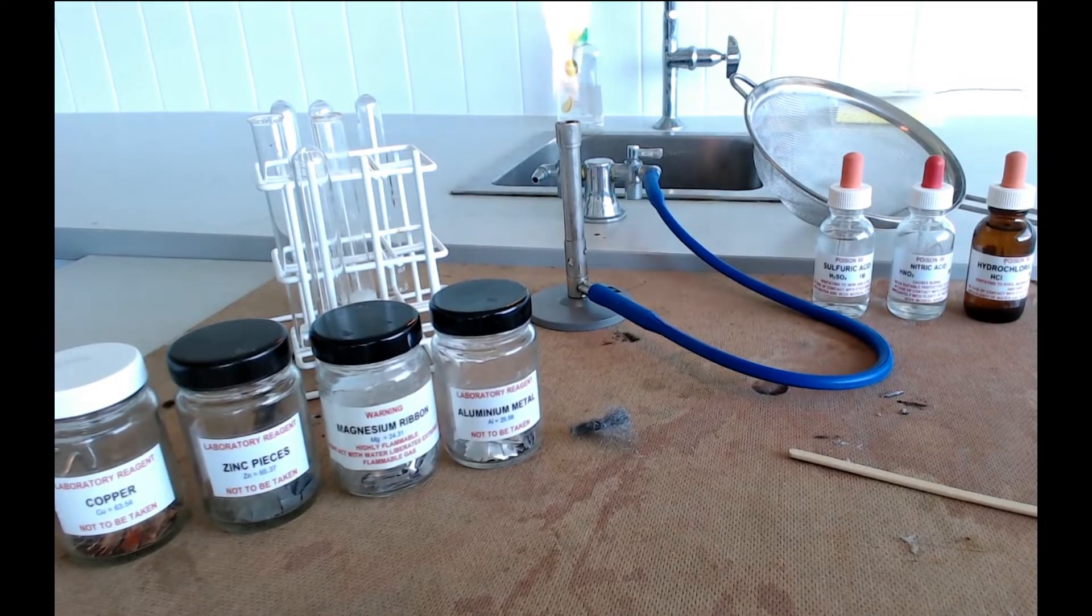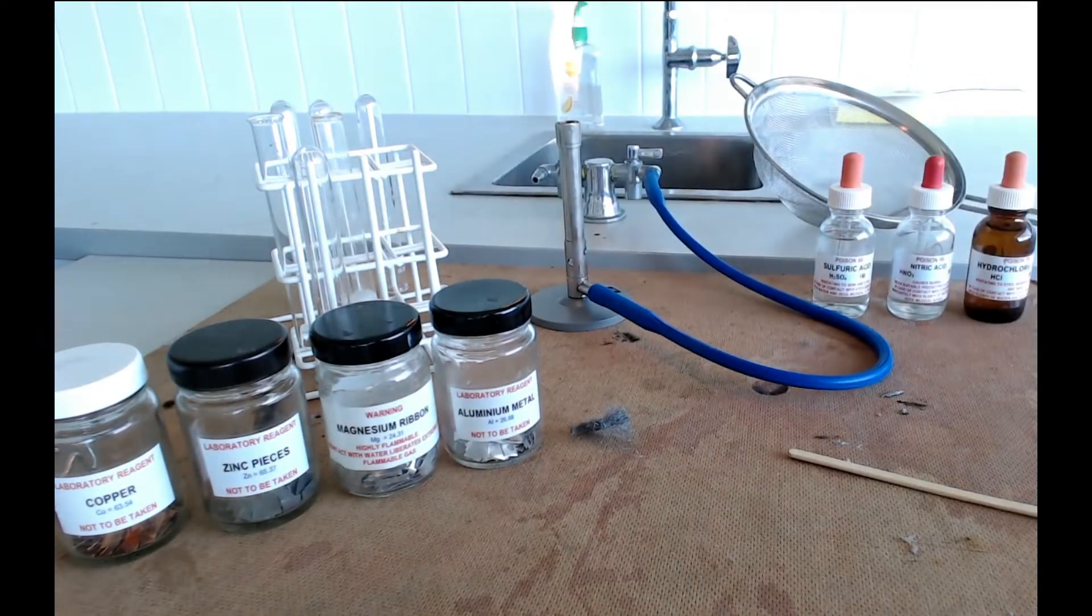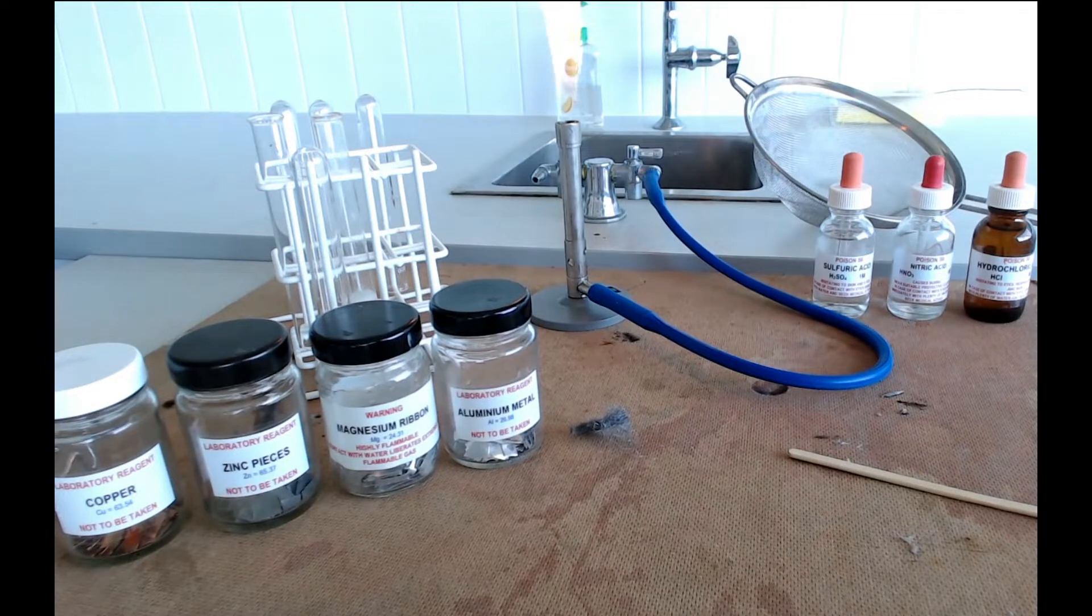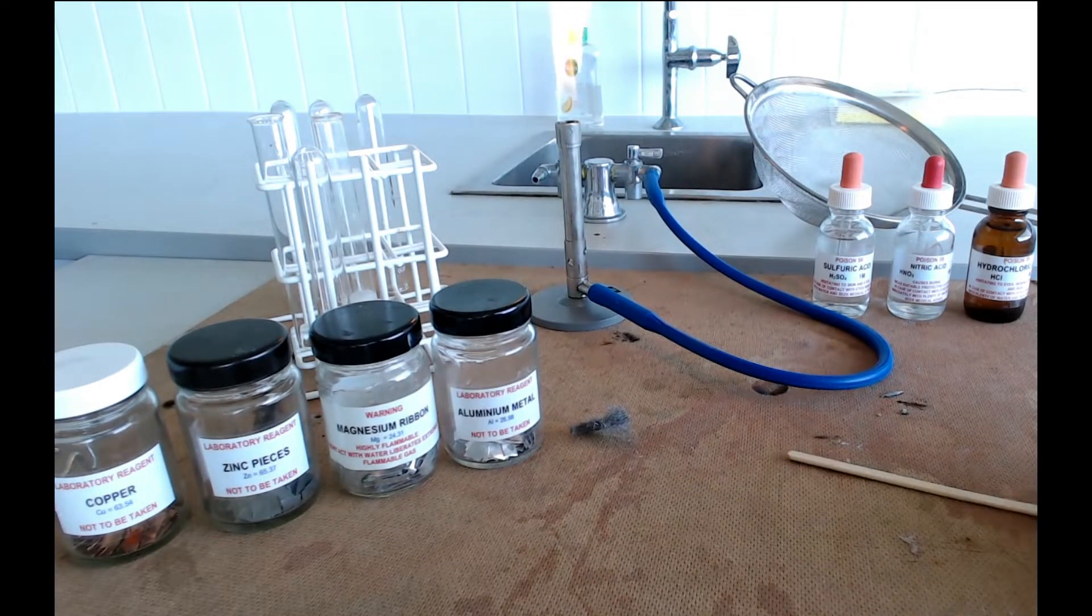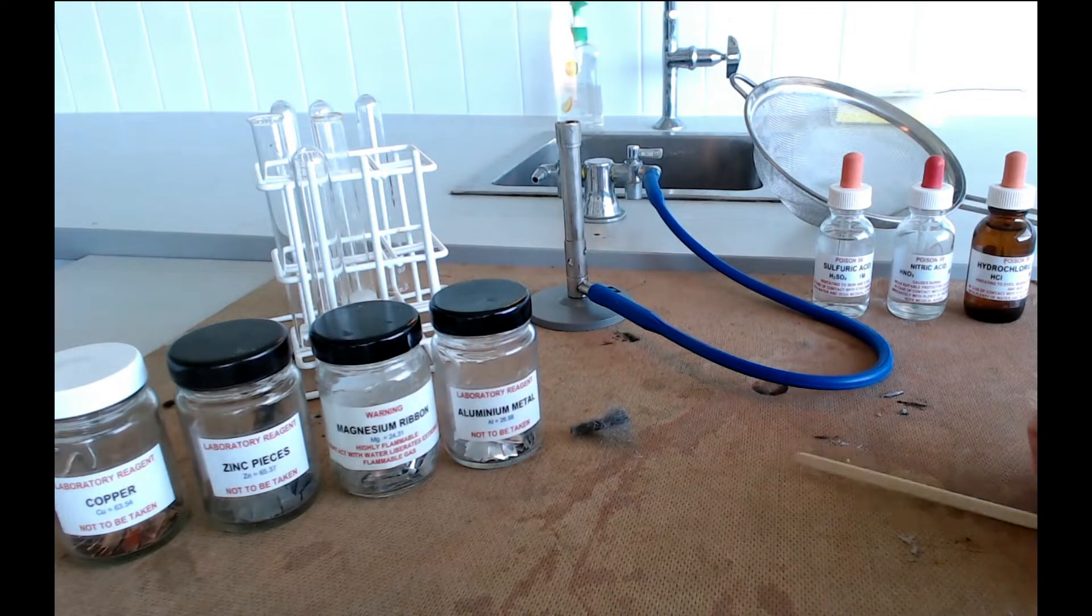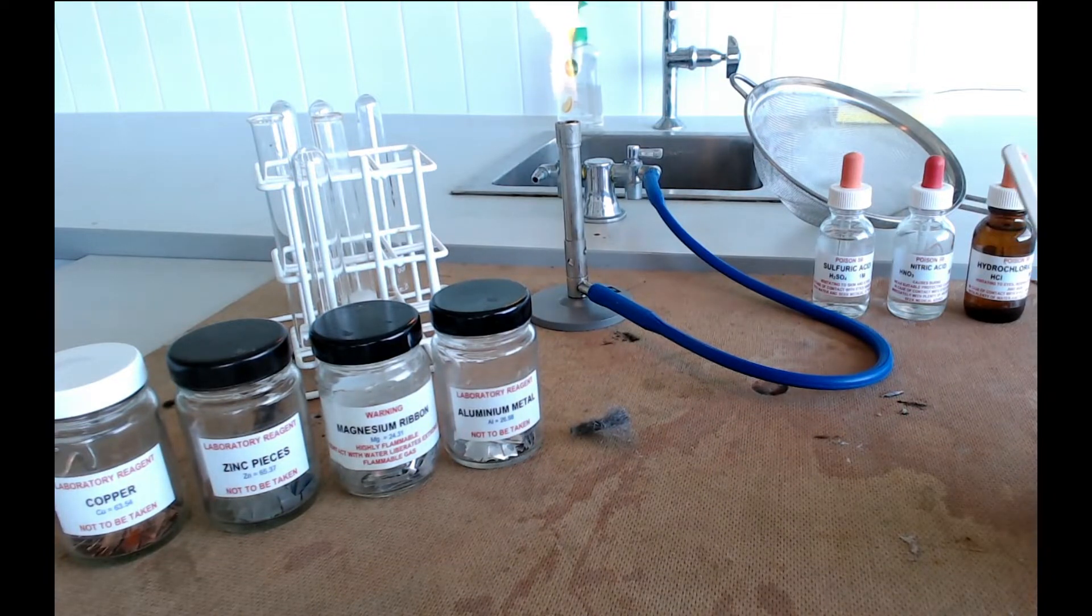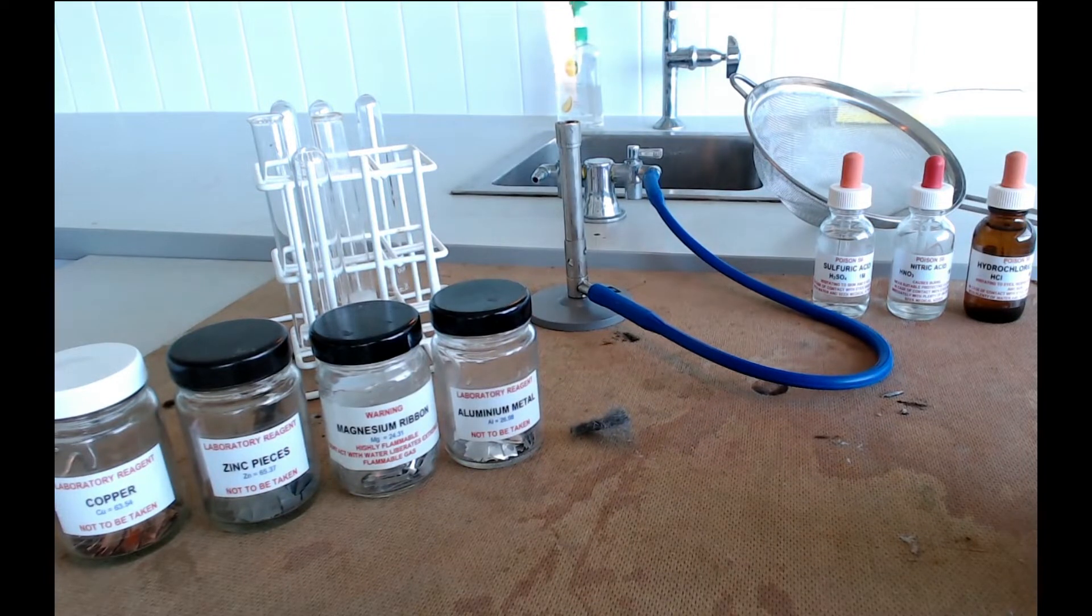Now every one of these reactions is going to take place inside a test tube. So you need some test tubes. And you're also going to produce a gas on some occasions. So you want to test that gas today by seeing what effect a flame has on that gas. So we've got this wooden splint which we're going to use to try and light any gas that we produce.